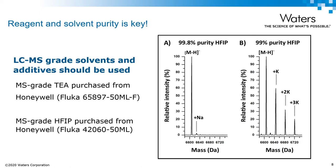Because of the negatively charged phosphate backbone, MS is typically run in negative mode, which results in the presence of sodium and potassium adducts. If you're familiar with oligo MS, you know that this is a really big problem. Here we have 99.8% pure HFIP on the left and 99% pure HFIP on the right, and although different vendors assay their reagents differently, it's clear that the lower purity additive is much more susceptible to adduct formation.